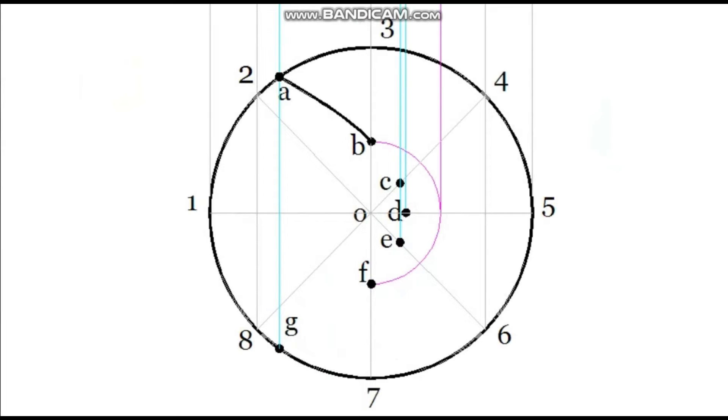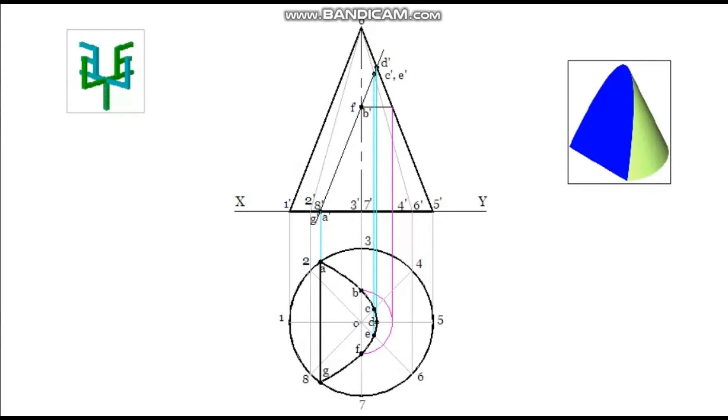Join these points with a smooth curve. Points G and A should be joined by a straight line because these points are on the base and all other points are on the lateral surface of the cone. Draw sectional lines or hatching lines in this closed area.